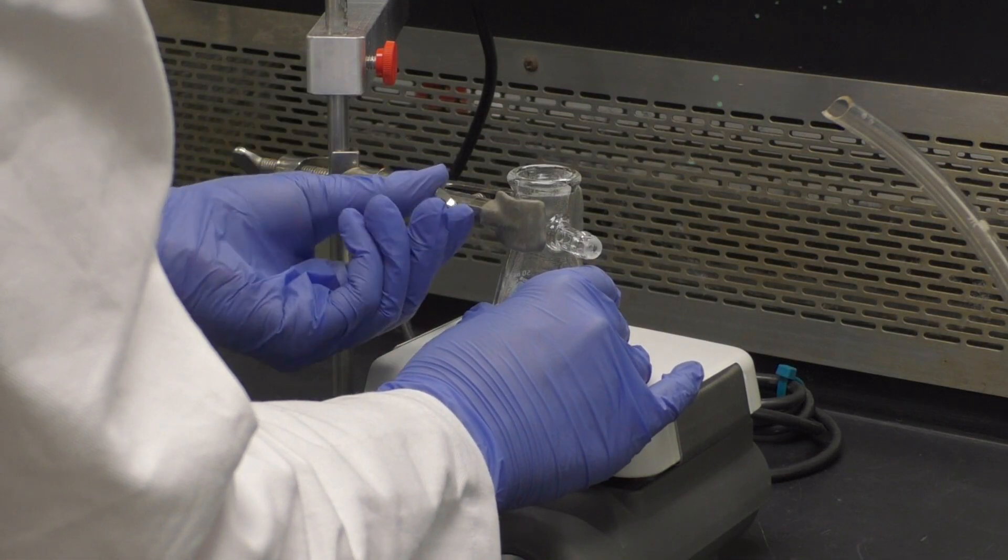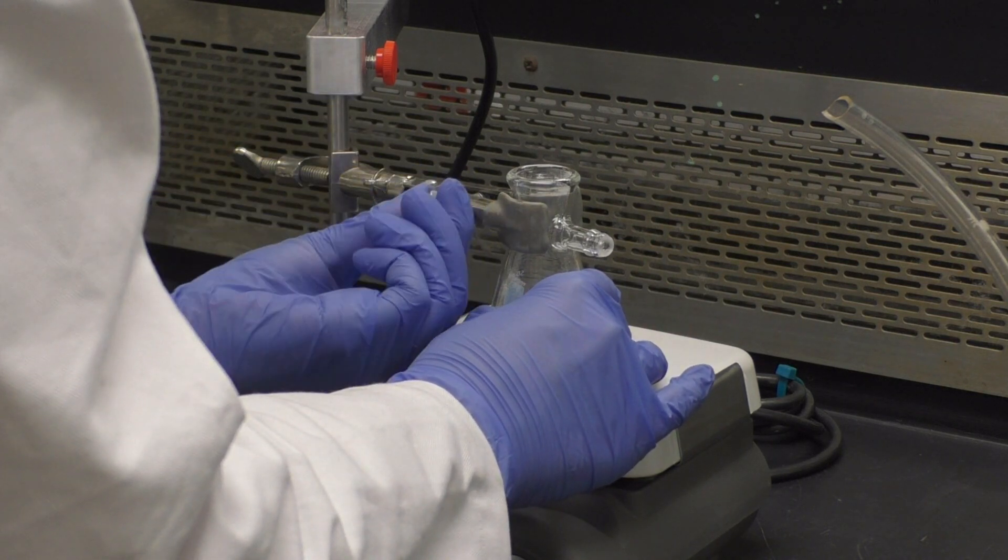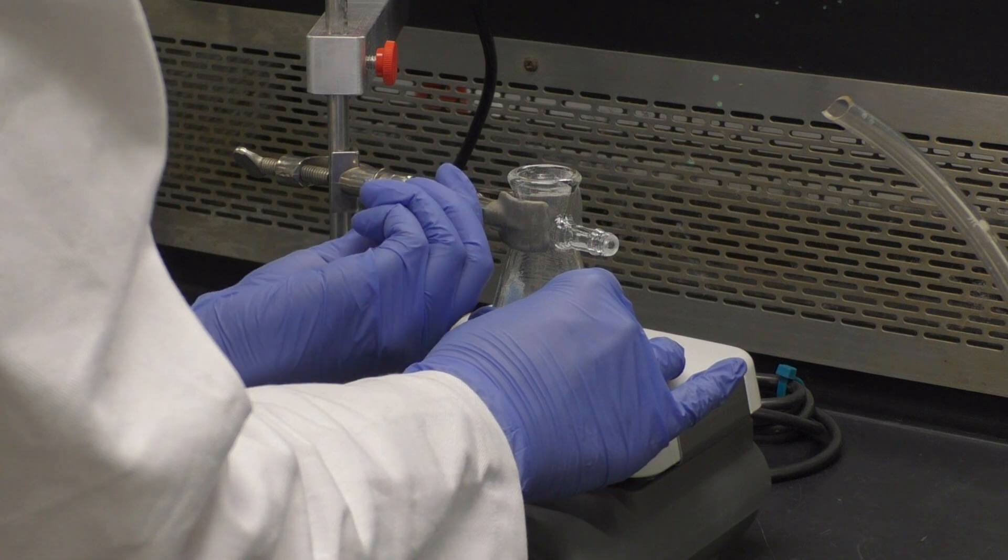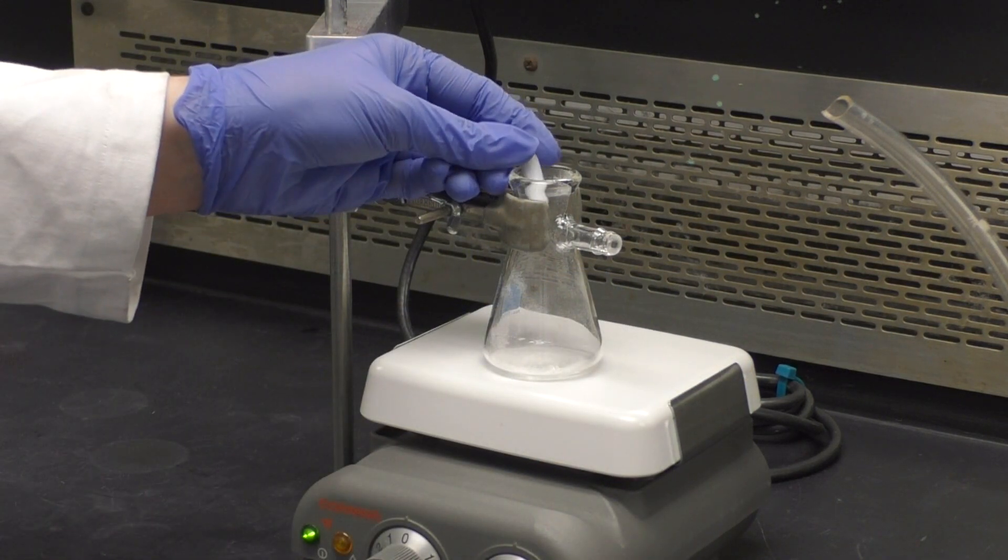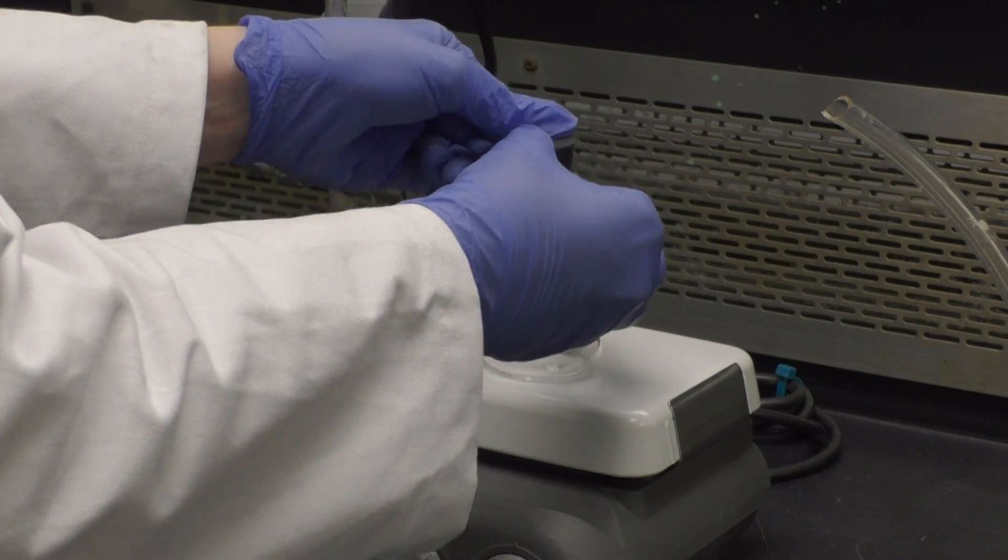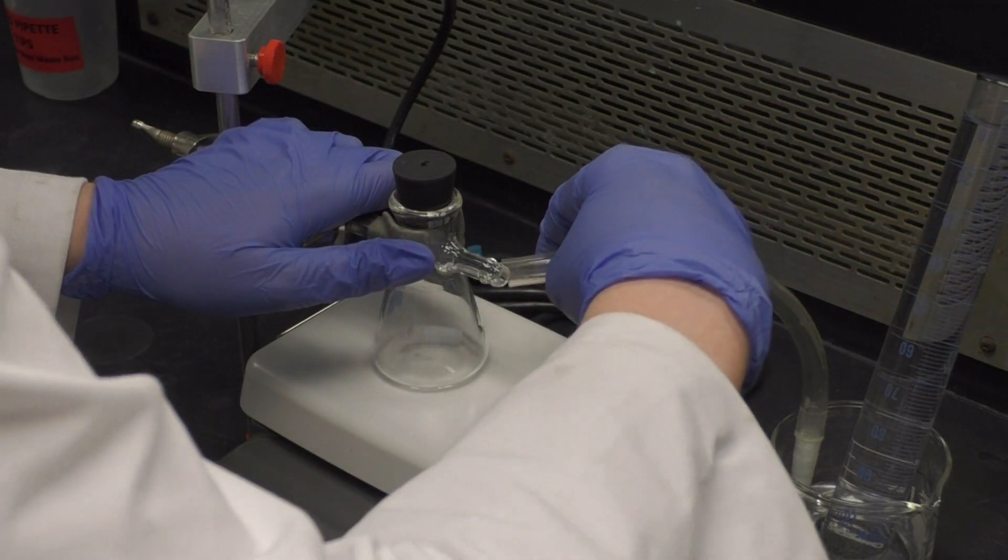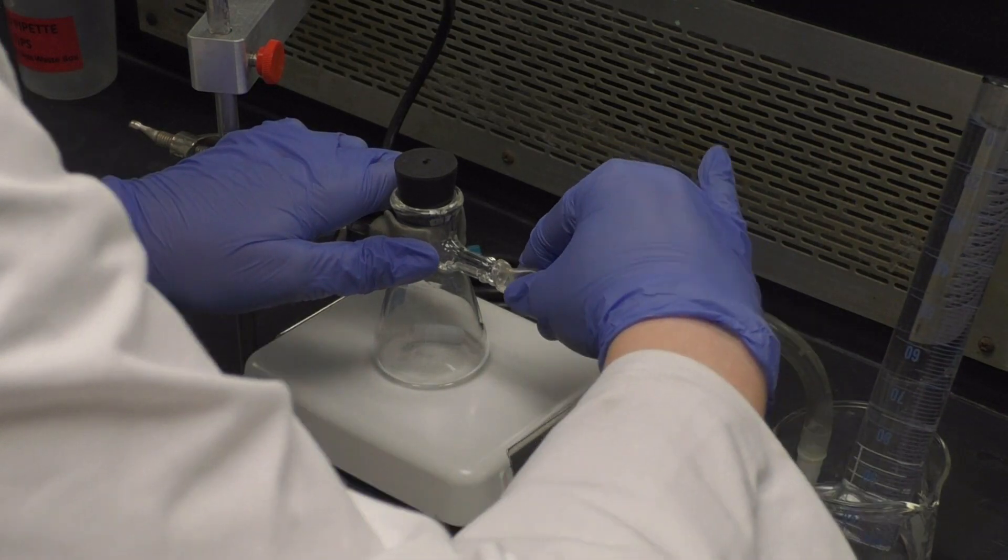Take your filter flask with the weighed sample, place it on a hot plate stirrer, and secure it to a support stand with a two prong clamp. Next, add your 1 inch stir bar and place the rubber stopper securely on top. Finally, attach the plastic tubing to the neck of the filter flask to finish your gas collection setup.